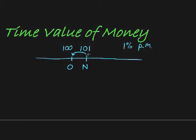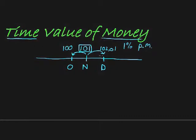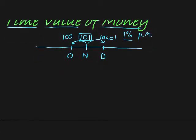In another month it will earn another one percent interest on this amount, which means the new amount will be R102.01 — it will earn R1.01 — so it will be R102.01 at the end of December. Notice that at different times the value of the money is different. That is called the time value of money, and it has to do with the fact that money is earning interest. We'll stick to the idea of money earning interest.